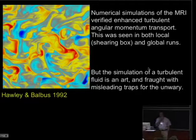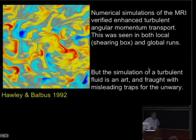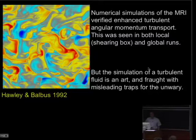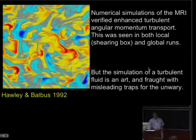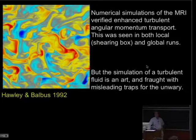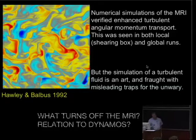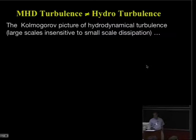Numerical simulations from the early days of the MRI verified that enhanced turbulent angular momentum transport resulted from the nonlinear resolution of the instability. This was seen in both local shearing box runs and later in global runs. Turbulence was sustained, significantly enhanced angular momentum transport was present and remained despite the various dissipative processes. But it is still the case that the simulation of a turbulent fluid is an art, and it is fraught with misleading traps for the unwary.